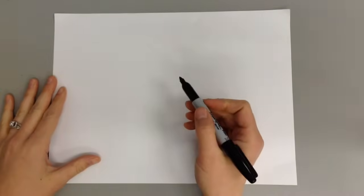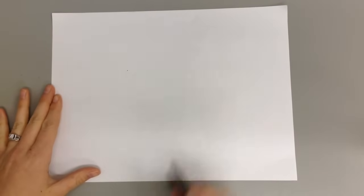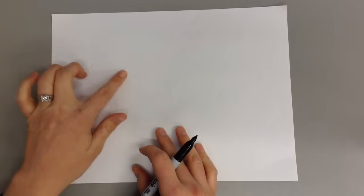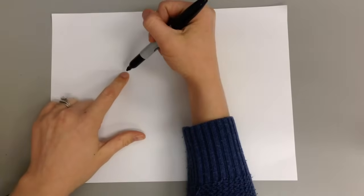So the first thing we're going to do is use a Sharpie and find a spot somewhere close to the middle where you want to start. Just make a dot there with your Sharpie. We are going to create lines that radiate out from the center, the center being this line.